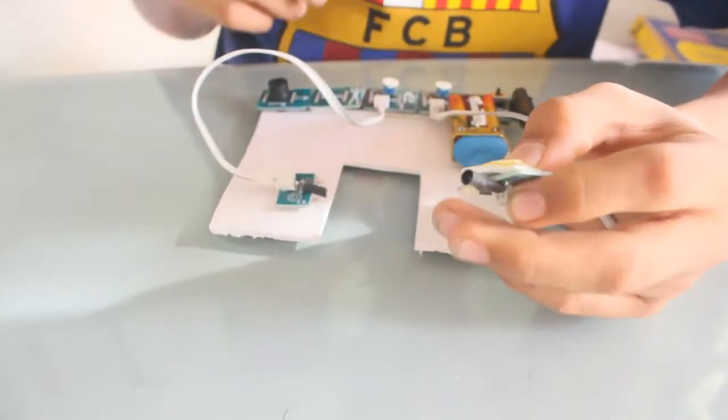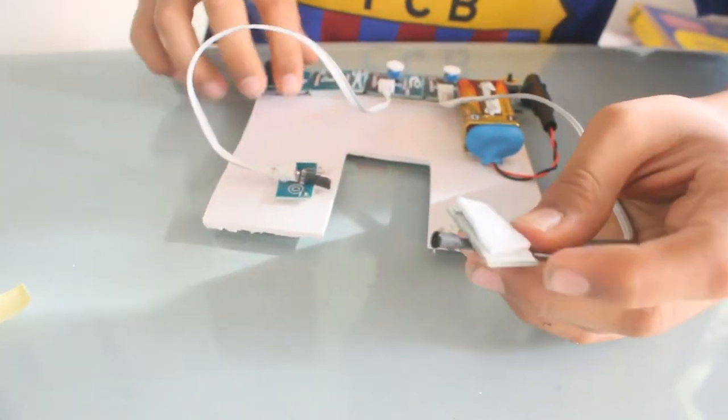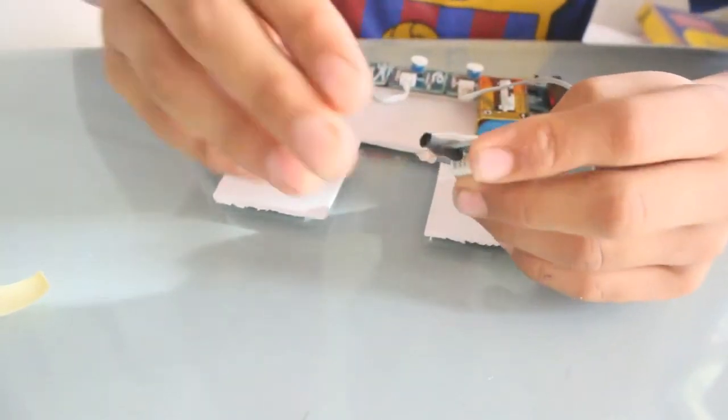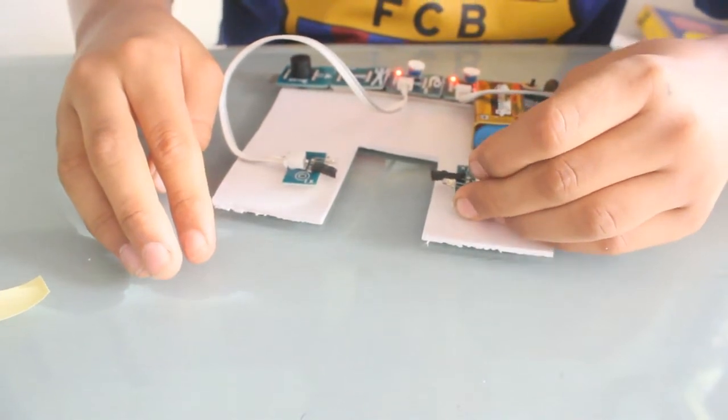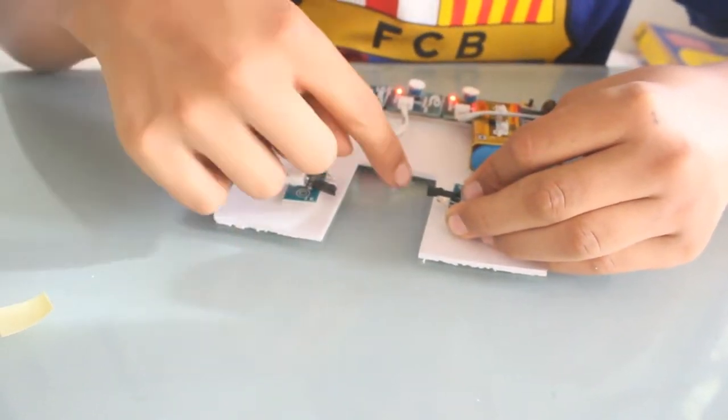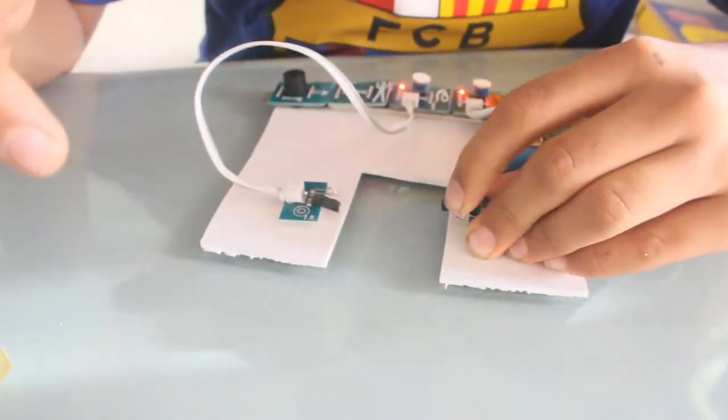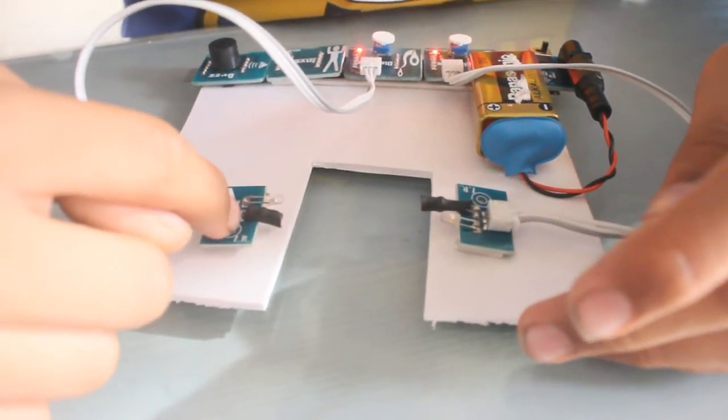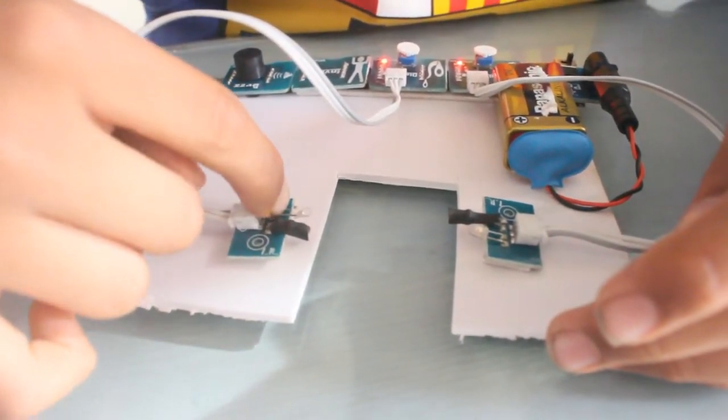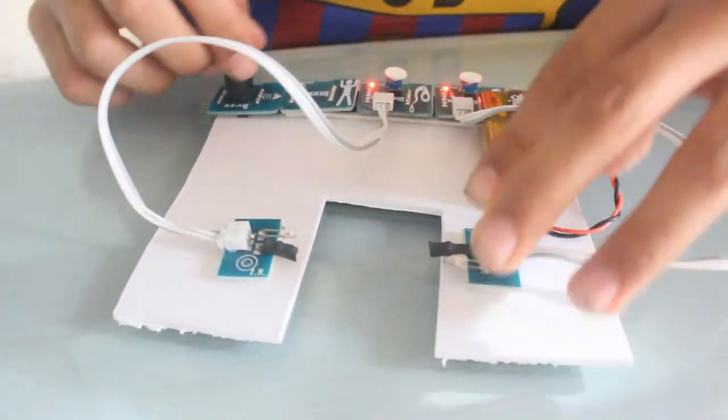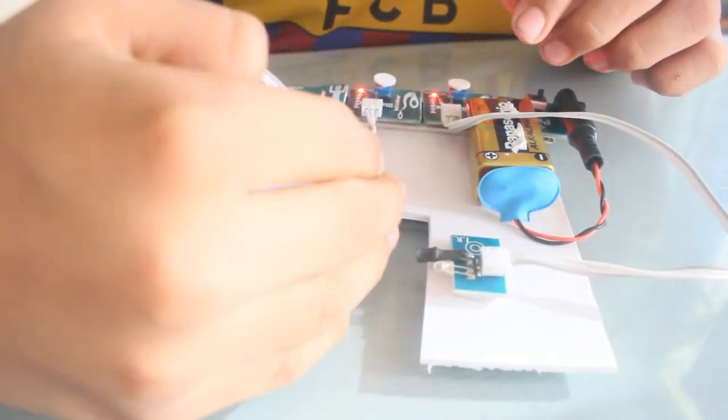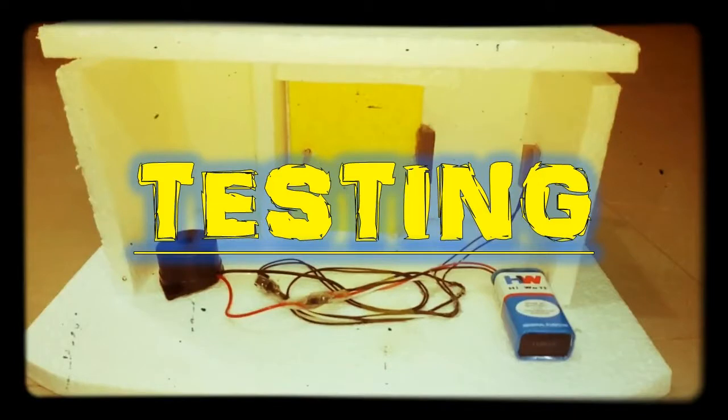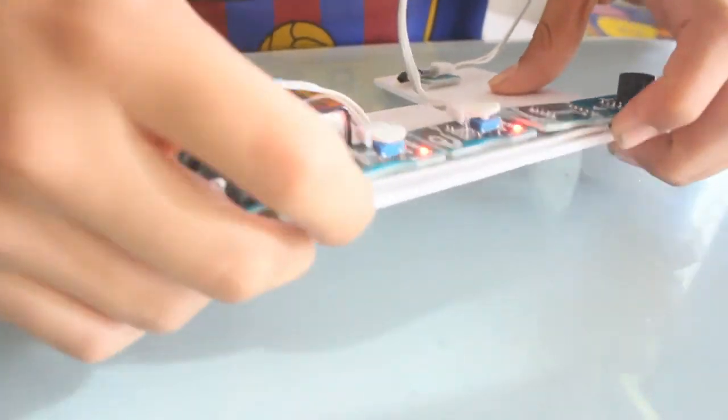And now you should be careful while sticking the second infrared. So it is ringing as you can see. Now it is not ringing, as the transmitter transmits the signal to the receiver. As you can see, my hand comes through, it's ringing. So now let's just make this, and this is your burglar alarm.